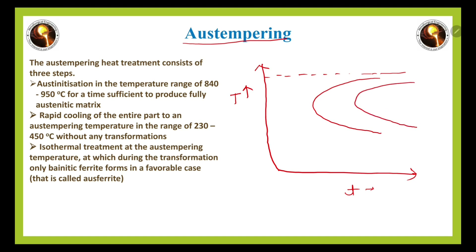The second curve is the transformation finish curve. We also have two special temperatures: the Martensitic Start (Ms) temperature and the Martensitic Finish (Mf) temperature.